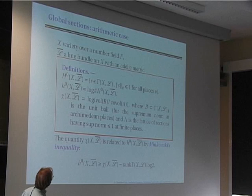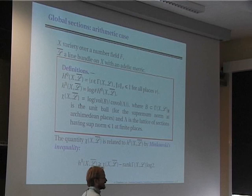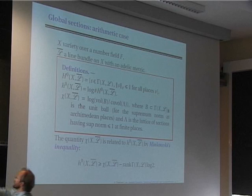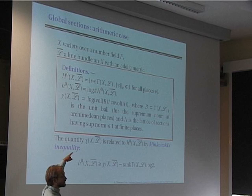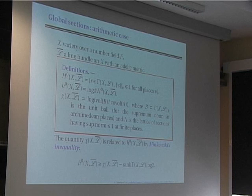I want to do the same in arithmetic geometry. Let X be a variety over a number field F; I take a line bundle together with a metric and define certain spaces and numbers. The first space is H⁰(X, L̄), the space of arithmetic global sections of the metrized line bundle L̄ — the analog of H⁰(X, L). I define this as the space of global sections of the generic fiber which have norm at most one at all places. This is exactly the analog of H⁰ of the model over B.